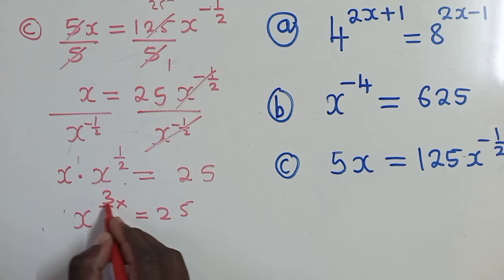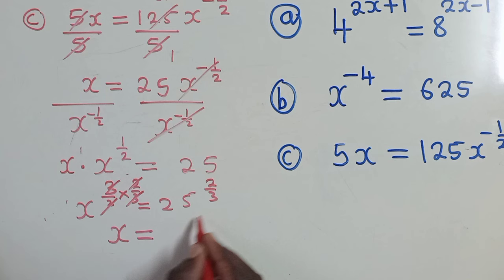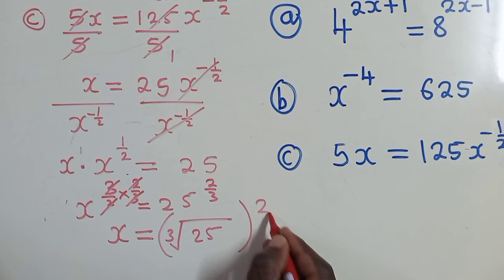So 3 and 3 will cancel, 2 and 2 will cancel, which I remain with x is equal to, here the cube root of 25 and power 2 there. Okay, so this is our solution. We can leave our answer like this.